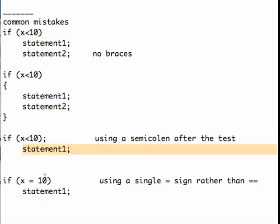And the third kind of error is, let's suppose we want to test to see if x is equal to 10, and we forget to use the double equal sign. Instead we use a single equal sign.